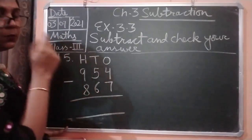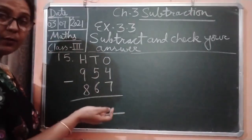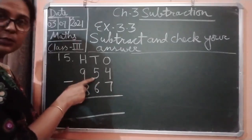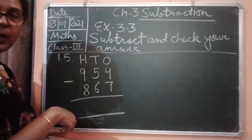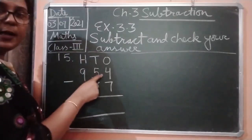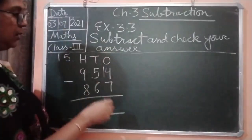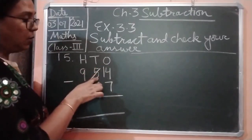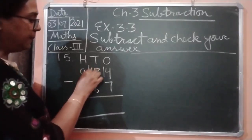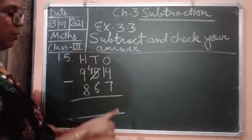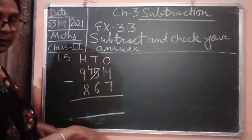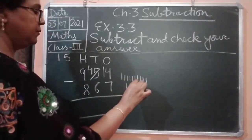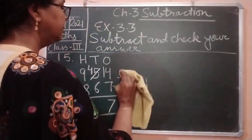Here you can see 4, and 4 is smaller than 7. So what we will do? We will ask help — we will knock the door of the nearest neighbor. At the tens place, this neighbor has 5 tens. So it will be ready to give 1 ten to this 4 ones. Now because it has given 1 ten to the 4 ones, what is left over here? This will become 4. Now subtraction: 14 minus 7. Count: 1 through 10, then 11, 12, 13 — so 7 will be left.